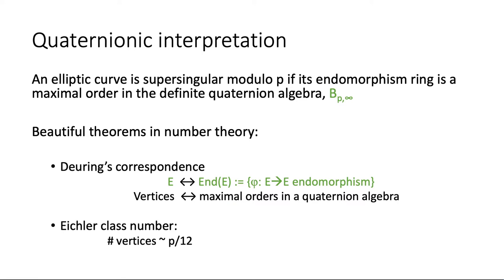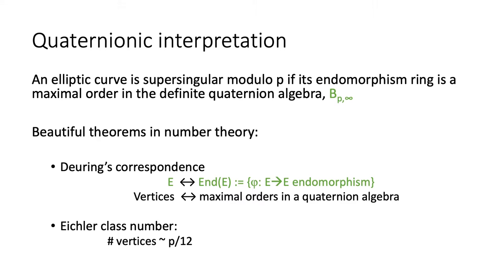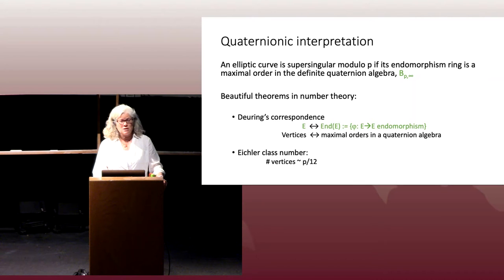Another fact we use in cryptography is the size of the graph. If you fix p and look at supersingular elliptic curves in characteristic p, thinking of the graph in terms of maximal orders in the quaternion algebra B_{p,∞} helps us because we have the Eichler class number formula, which tells us the number of nodes is roughly p over 12. That allows us to determine what size p to use to achieve a certain level of security.